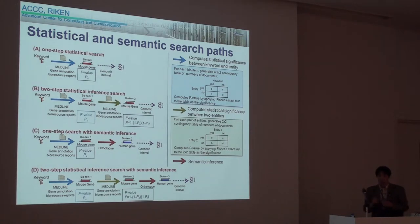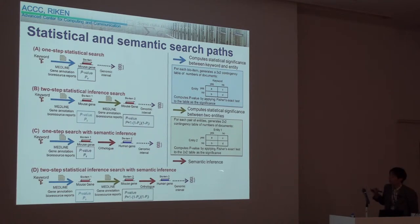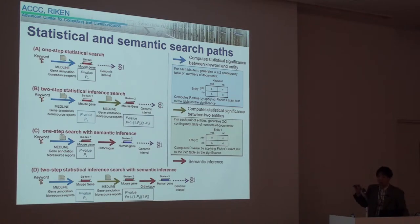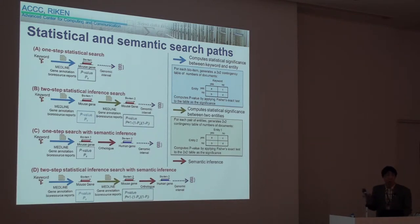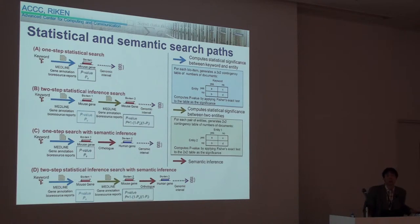GRACE supports four search passes — A, B, C, D — having three types of search: direct search, co-citation search, and semantic search. GRACE performs all possible search passes for each entity in parallel and selects the best p-value for each resultant entity. The resultant entities are prioritized by their best p-values. This requires very large computation resources, and we use eight computers to obtain the solution in five or six seconds.